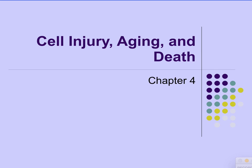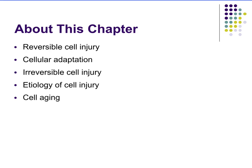Chapter 4: Cell Injury, Aging, and Death. In this chapter, we'll talk about reversible cell injury, how our cells adapt to different demands placed on them, and then we'll move on to cell injury that's irreversible. We'll end with etiology of cell injury — so causes — and then discuss normal cell aging.